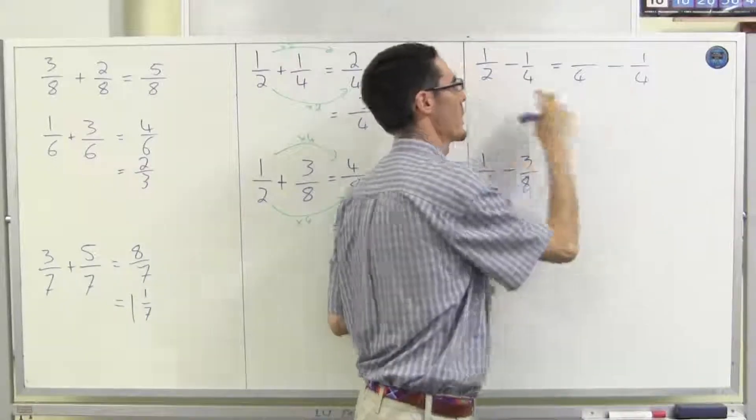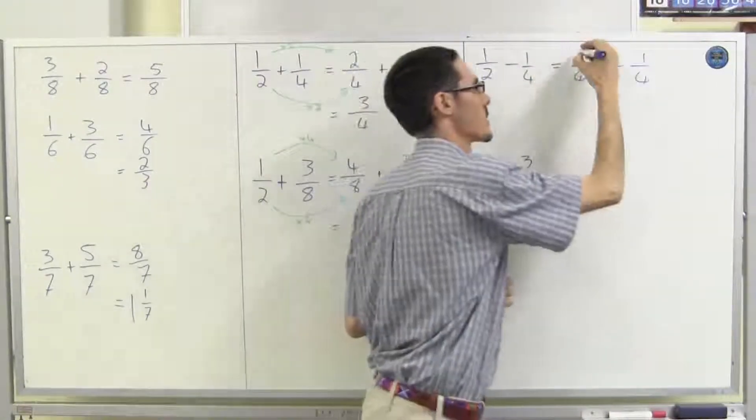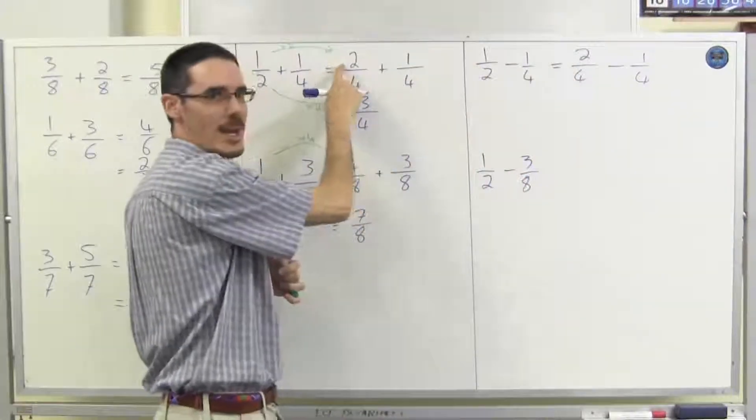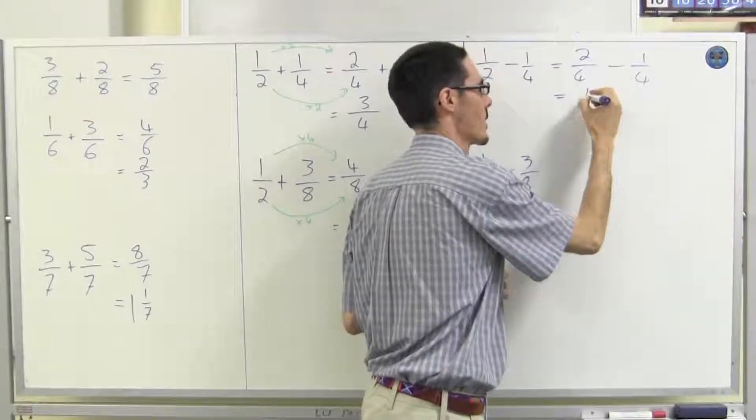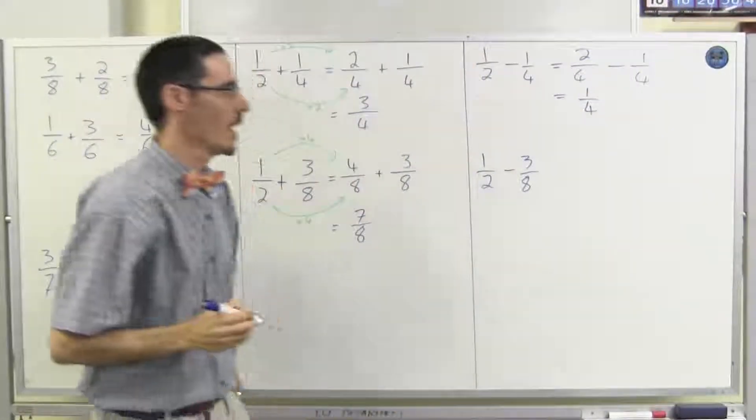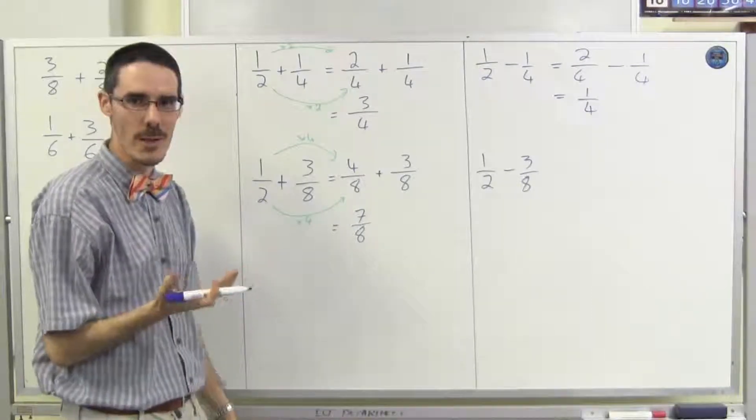Well, this one's already a quarter. This one, two times two makes four, so one times two. And that should be the same as I had last time. And then it's just two minus one, one quarter. And again, you probably knew that already, but I wanted to show you the technique before we go to harder questions.